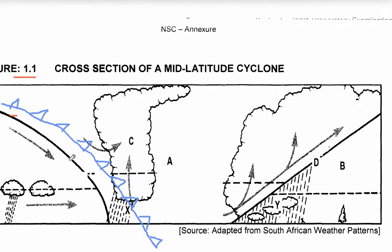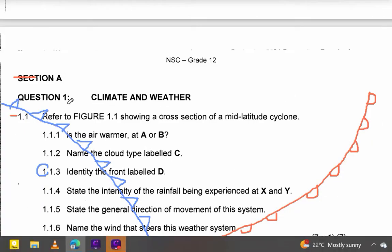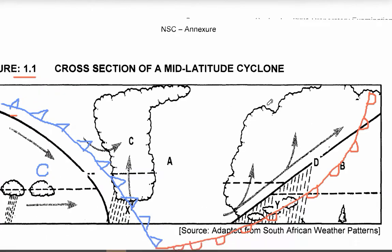If we have the cold front, this portion here is the cold sector. In front of the system, we have the warm front. Let's draw the warm front there. So we have the warm front in front of the system. I was trying to show you that on this side we have the cold front, and on this side we have the warm front.